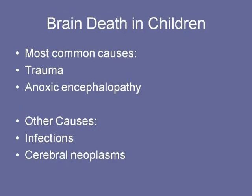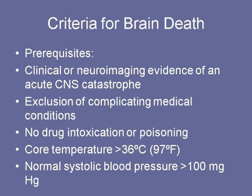To talk about some of the differences with pediatric brain death: the most common causes in children are trauma and anoxic encephalopathy. Other causes include infections and CNS malignancies. The prerequisites for brain death criteria are clinical or neuroimaging evidence of some CNS catastrophe, exclusion of complicating medical conditions, severe acidosis, or severe electrolyte imbalances, no drug intoxication or poisoning, a core temperature greater than 36 degrees, and normal systolic blood pressure — either 100 mmHg or what's appropriate for the age of the child.